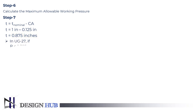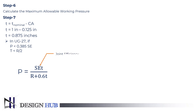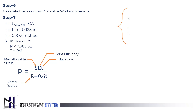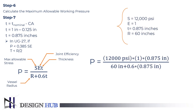According to UG27, if P is less than 0.385 SE, and T is less than R divided by 2, then use the following formula for MAWP. Where E is joint efficiency, T is total thickness, S is maximum allowable stress, and R is vessel radius. Put all the values in the equation and calculate the maximum allowable working pressure. The value we get is 173.5 pounds per square inch.